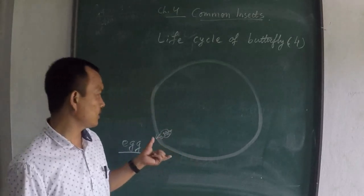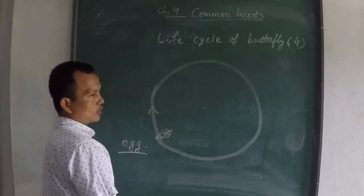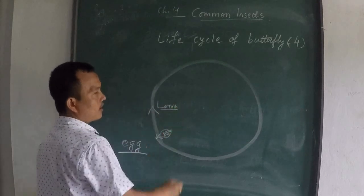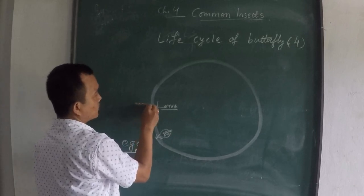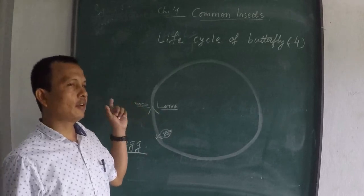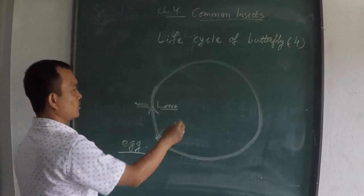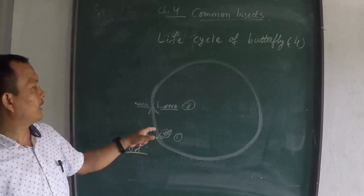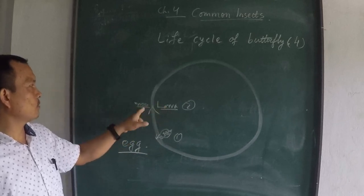And after a few days, this egg converts into a larva. So larva is nothing but a small like caterpillar. It looks like a caterpillar which looks like a worm. So this is the second stage. The first stage was an egg. It lay on a leaf or under a leaf. And after a few days, this egg cracks and hatches into a larva. Or in other words, you can call it caterpillar, which looks like a worm.